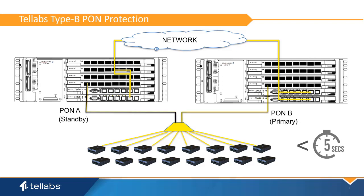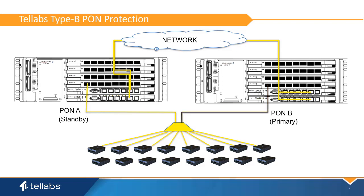Detection of a Pond failure and switch takes less than 5 seconds. Along with Pond failure, the Pond Protection algorithm can detect an uplink failure from the primary OLT. If the primary OLT becomes isolated on the network, all Pond ports that are enabled for path protection will switch to the secondary Pond.